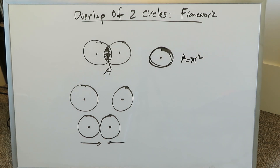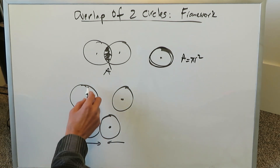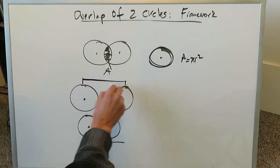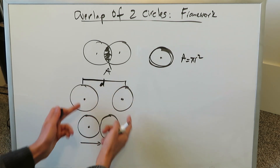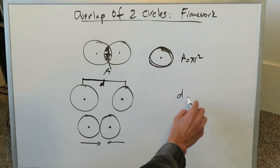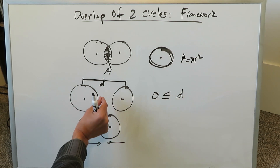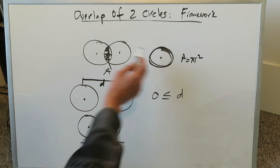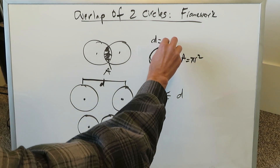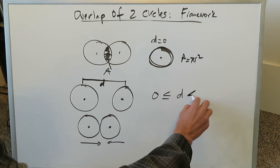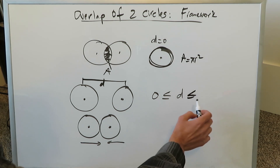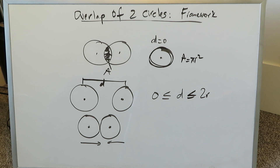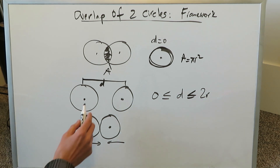You basically have two extremes with regards to the distance. Looking from one center to the other, there is a certain distance present. If the distance d is equal to zero, which means both circles have become coincident, you have complete overlap. Versus the instance where the distance is less than or equal to two r.